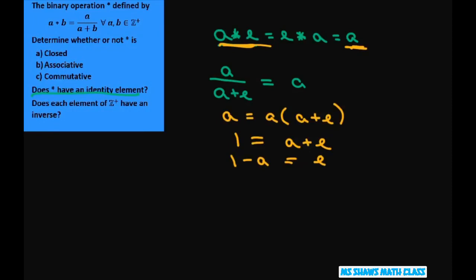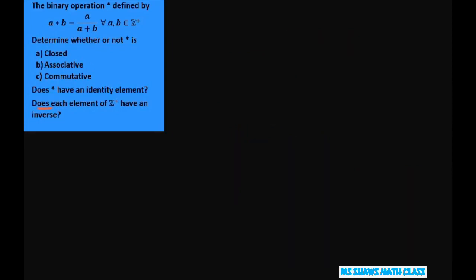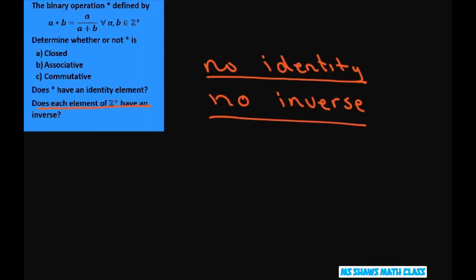Since e doesn't have a unique value, there is no identity. It has to be unique. It's not unique. So there is not an identity. And then also, if there is no identity, it means no inverse. It has to have an identity before it can have an inverse. And that's it. Thank you. Have a nice day. Bye-bye.